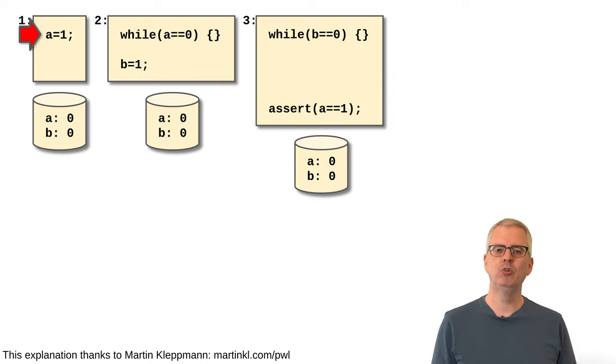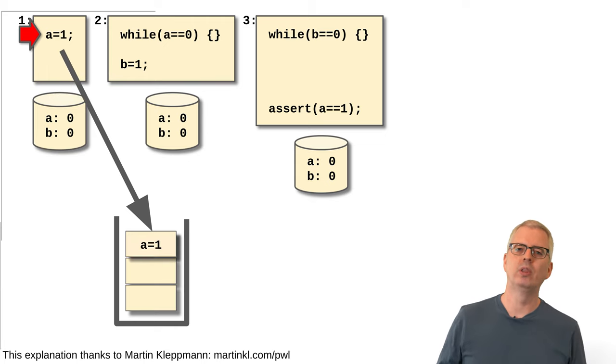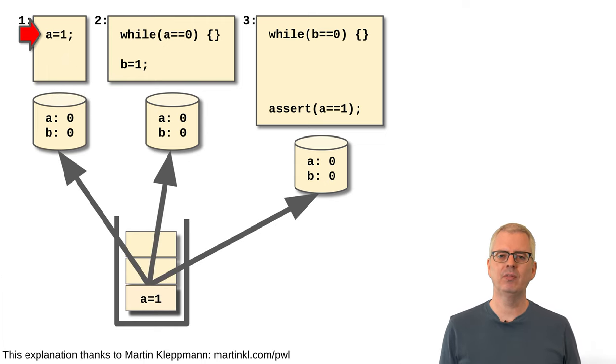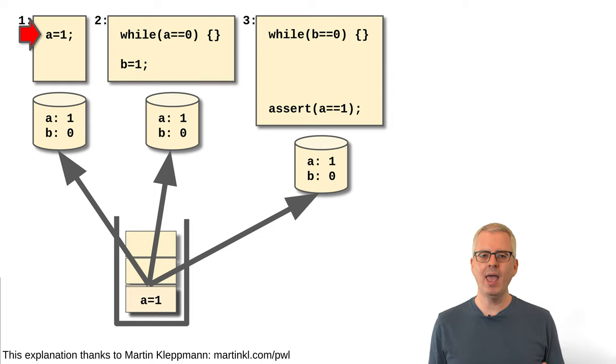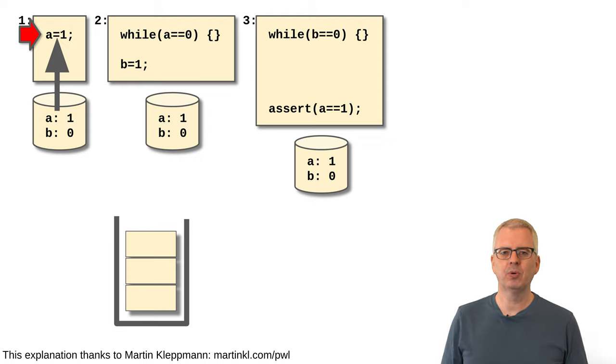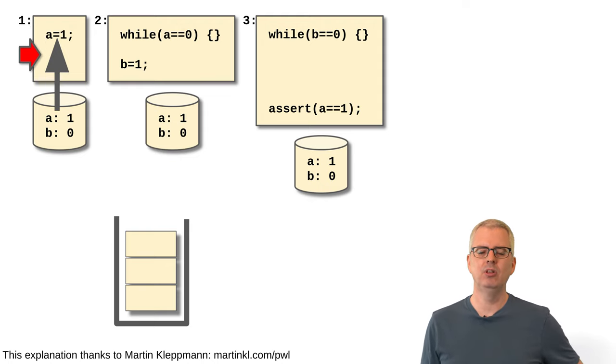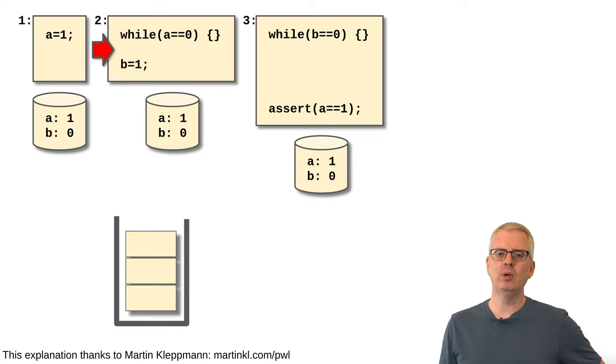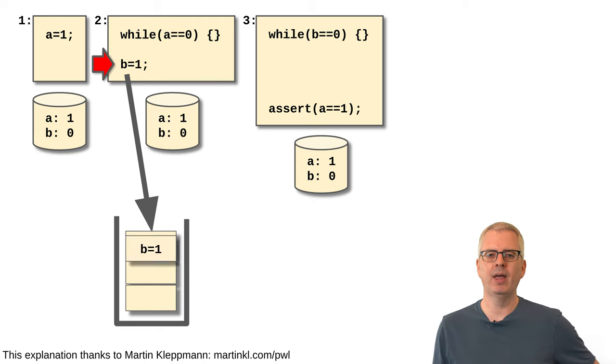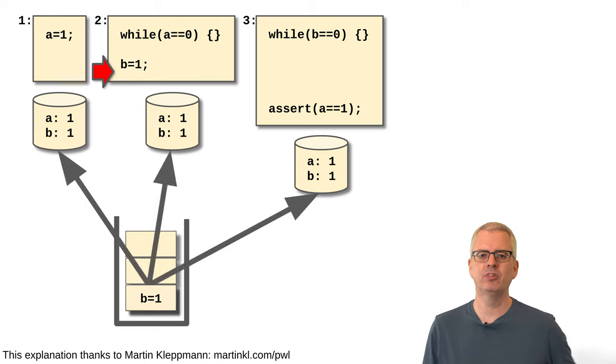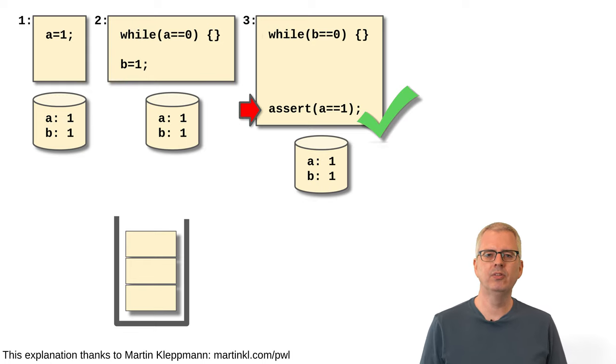When a write is performed, we need to do more work. The write to A gets put into a write queue. When the write reaches the head of the queue, it is broadcast to every cache that has a copy of the written value. Those caches then update their value for A, and now A equals 1 for everyone. The update to process 1's cache lets the process know that the write is completed and it continues running. Process 2 can now exit the while loop and writes to B. When that write reaches the head of the queue, the same thing happens again and process 3 exits the while loop. Once again, our assert passes since the new value of A has been communicated to process 3. Success! Our code still works, even though we are allowing our processes to actually run in parallel. Sequential consistency is powerful, and we can, and have, built actual parallel computers which implement this model.